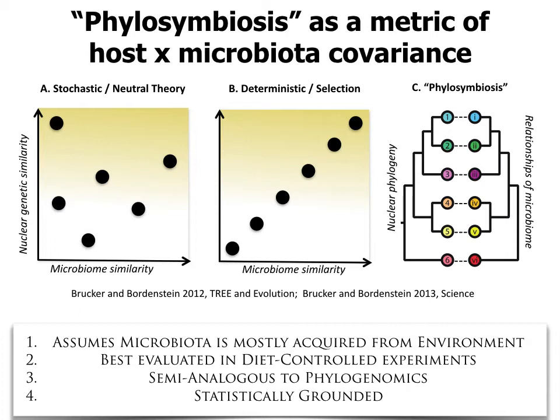We don't want dietary variation impacting the microbiota structure. What we're really testing is whether genetic differences in the host background will lead to acquiring different microbiotas due to host genetic variation. You can think about phylosymbiosis as analogous to phylogenomics — taking total 16S microbiota information and asking whether those relationships recapitulate the phylogeny of the host — and we can generate statistics for doing tree comparisons.